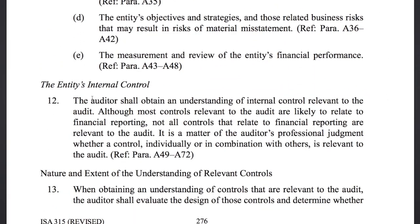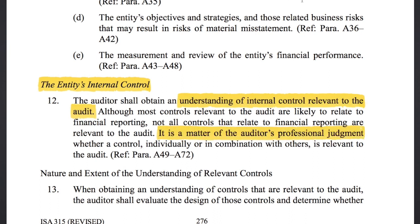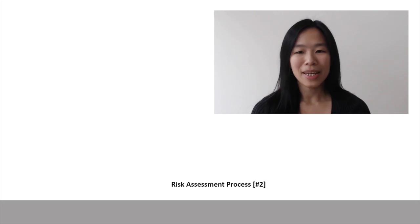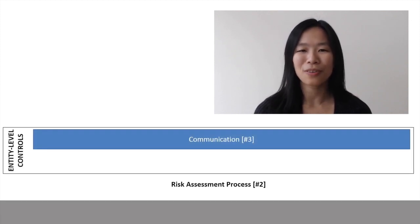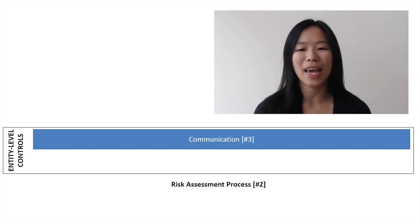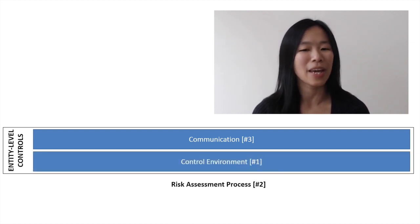ISA 315 revised devotes a lot of space to an entity's internal control. It can get pretty confusing, but just remember that the requirement is to obtain an understanding of internal control relevant to the audit, which is a matter of the auditor's professional judgment. Management identify the business risks then decide whether to exploit, tolerate, or transfer the risks, or reduce or avoid the risks by implementing controls at the entity level — like communication practices and behaviors that cultivate a culture of honesty and ethical behavior — in order to create a strong control environment. This is the foundation of an entity's internal control. If entity level controls don't work, nothing else will either.